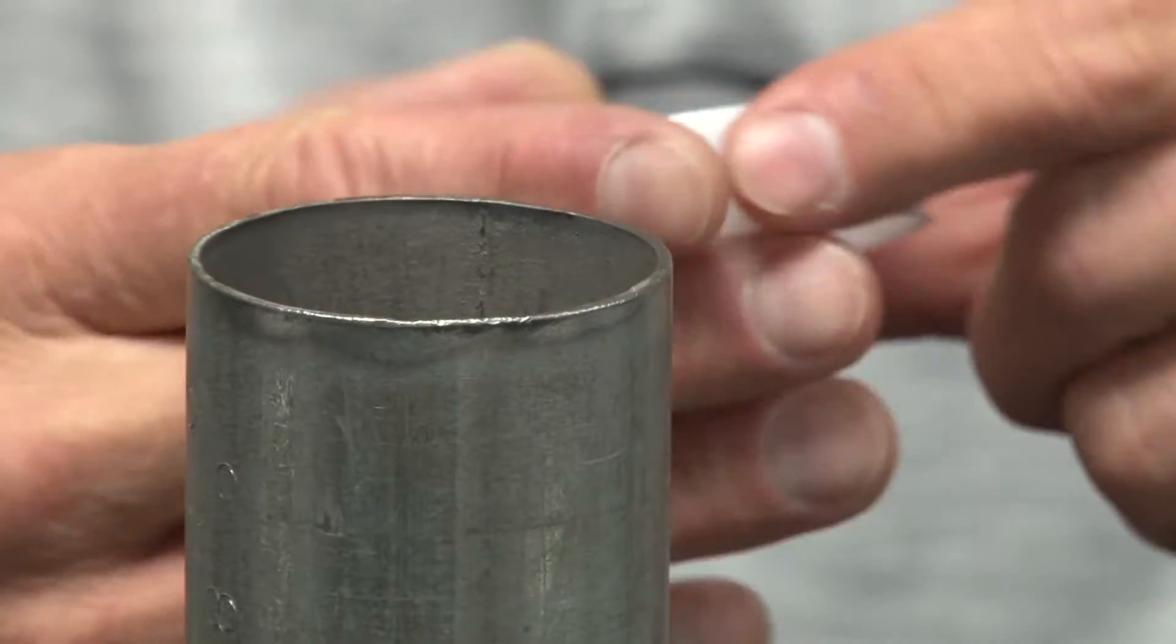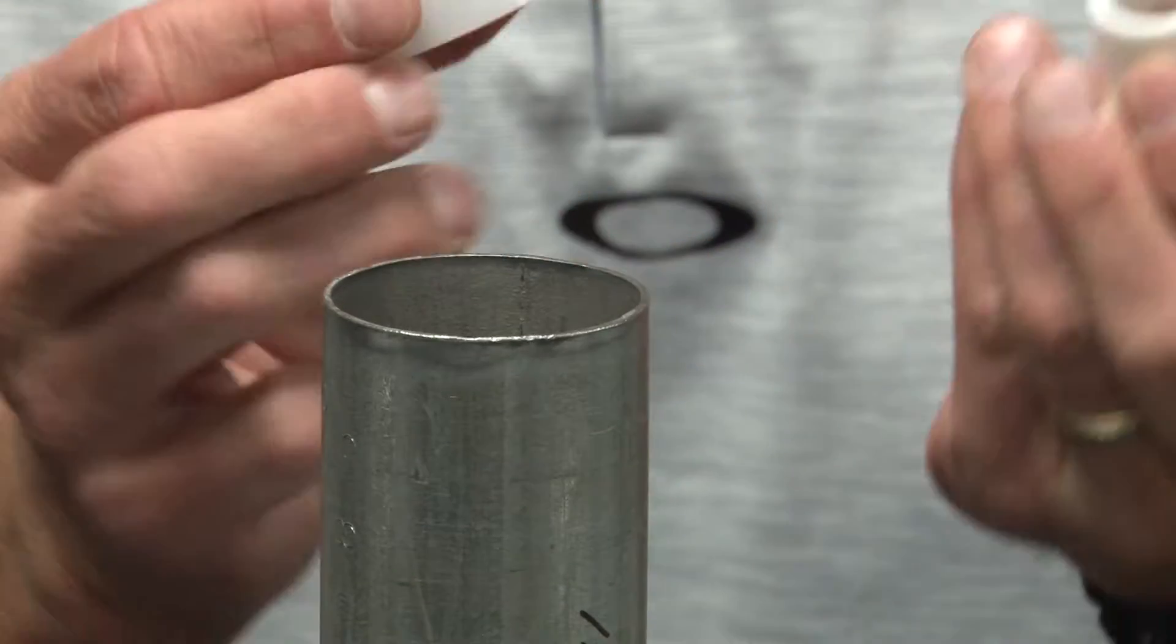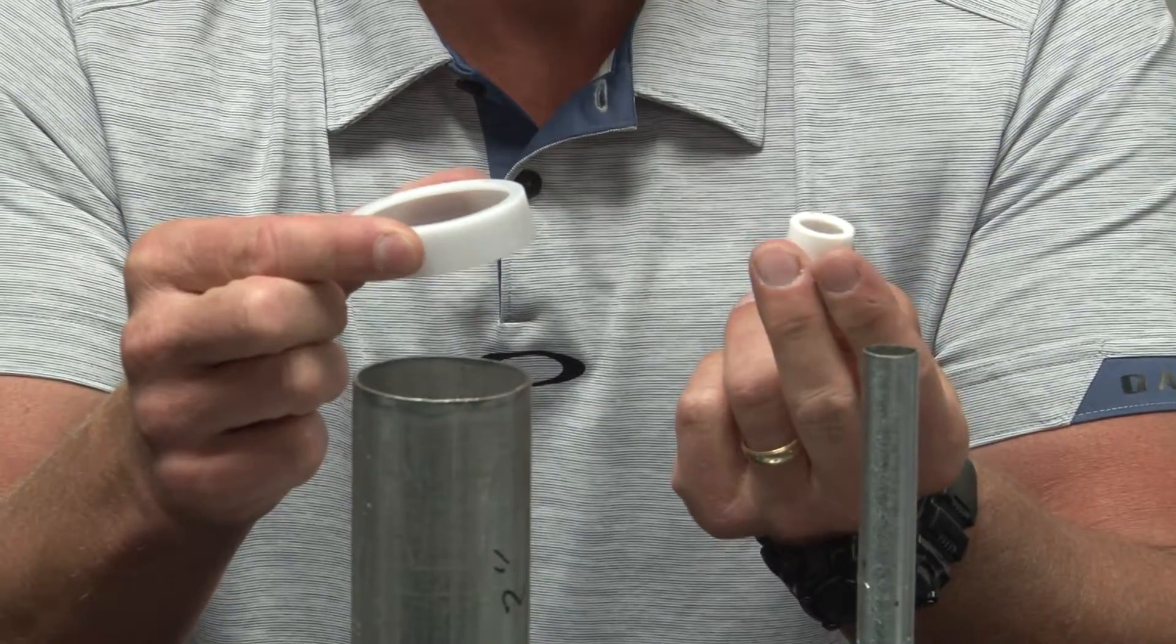In order to prevent this dangerous situation, Garvin Industries now manufactures what we call a bang on insulating bushing.